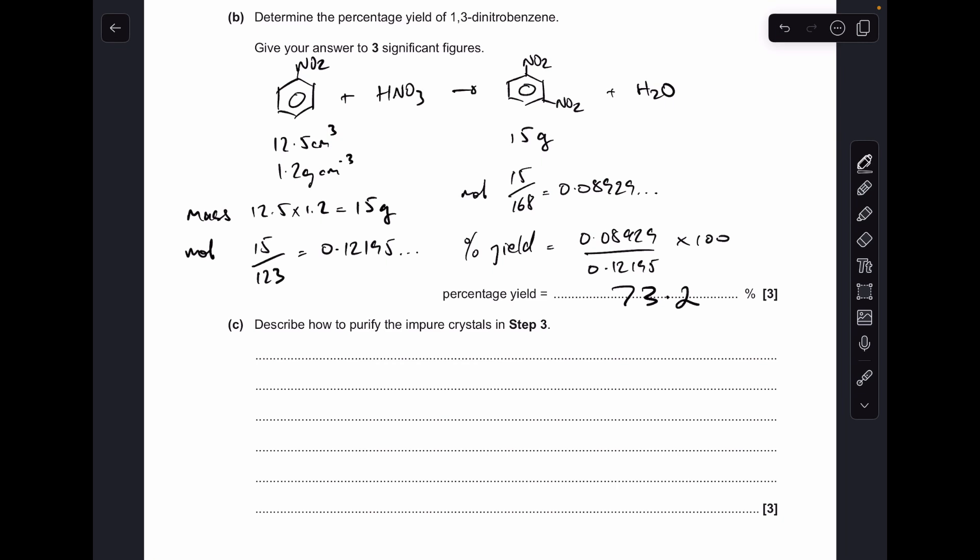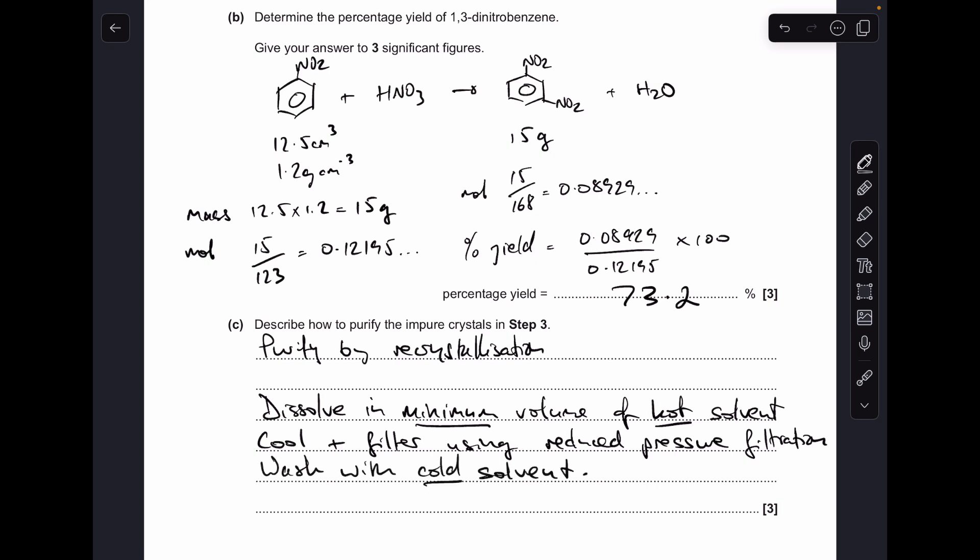And finally part C, describe how you would purify the impure crystals in step 3. So we're going to use the process called recrystallisation. So the first thing we do is dissolve the impure product in the minimum volume of hot solvent. Next thing we do is cool that down and we get the crystals back. Which we then filter using reduced pressure filtration. Or you could say using Buchner apparatus there if you wanted to. Next thing you do is wash your crystals with cold solvent this time. Because if it was hot it would re-dissolve and we don't want that to happen. And the last thing you do is you allow it to dry.